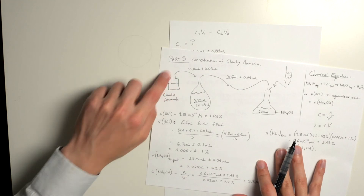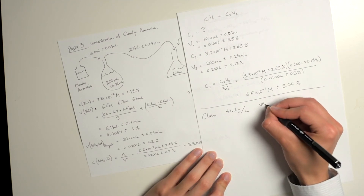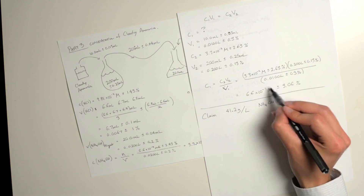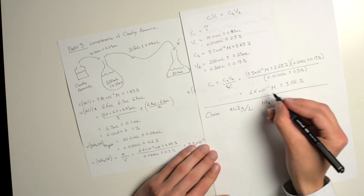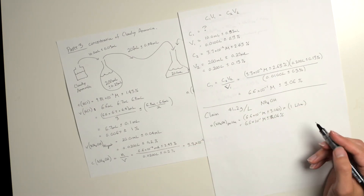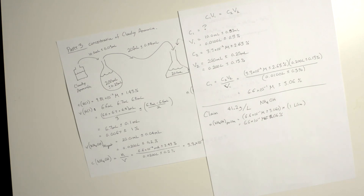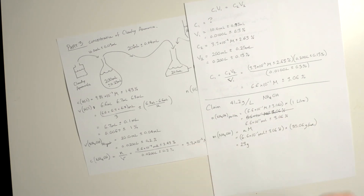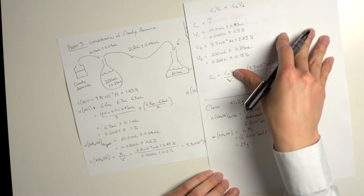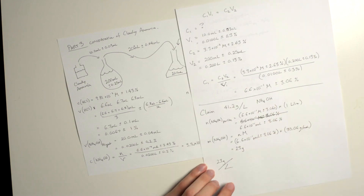We now know the concentration of the cloudy ammonia inside the tiny bottle. The claim on the bottle is that it contains 41.2 grams per liter of ammonia in the form of ammonium hydroxide. We want to convert our concentration from moles per liter into grams per liter, so we find how many moles are in one liter — 6.6 × 10⁻¹ moles — then convert that to mass. The result is 23 grams per liter, which is very different from the claimed 41.2 grams per liter.